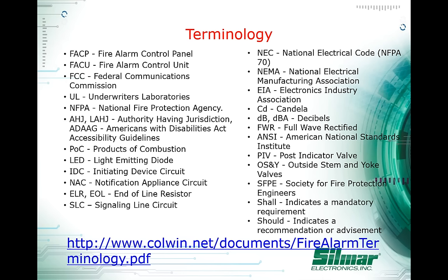If the fire panel is not installed by the door, an annunciator is required. An annunciator is a device that notifies a person as soon as they walk into the building of the fire panel's condition. You can perform every silence, reset, or acknowledge operation from the annunciator. This allows firefighters to see panel conditions when they arrive at a burning building. Types of annunciators include: zone annunciator, LCD annunciator (most common), graphic annunciator, complex remote annunciator, and remote annunciator.